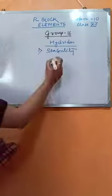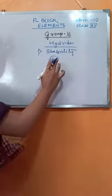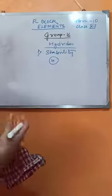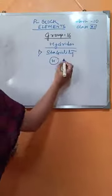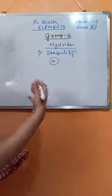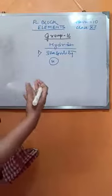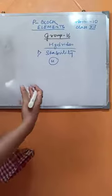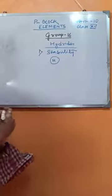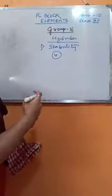Remember that hydrogen is a very small atom. We have said earlier that they form covalent bonds with the Group 16 elements. So if the size of the Group 16 elements is large, then there won't be a proper overlap between their orbitals and that of hydrogen, because there will be a mismatch of orbitals. For better overlap, the orbitals have to match with each other.